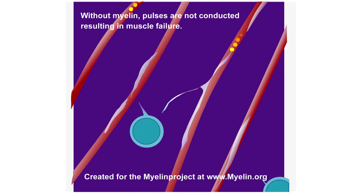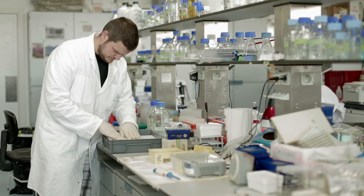You can compare myelin to an electrical wire, which also needs to be insulated for efficient transmission of electricity. In MS, this myelin is lost, causing problems with the transmission of electrical signals between neurons. So multiple sclerosis is an autoimmune disease with a central role of inflammation, and that's also the reason why we are interested in studying this disease.